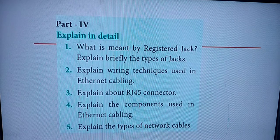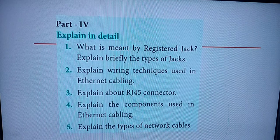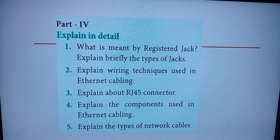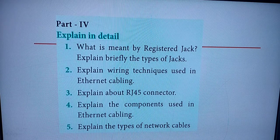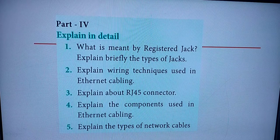Fifth question: explain the types of network cables. Go to page 186 — section 13.2 'Types of Network Cables.' Cover all types: coaxial cable, twisted pair cable, fiber optics, USB cable, serial and parallel cables, and on the next page — Ethernet cable. The answer spans pages 186, 187, and 188. That is Roman numeral IV, fifth question. We have now completed all book-back sections.